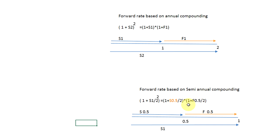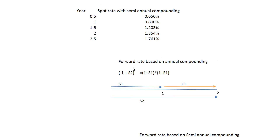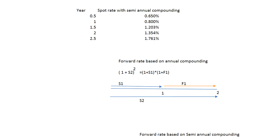One important point: when attempting a question or trying to calculate forward rates from spot rates, always notice what type of compounding is being used. Normally it's continuous compounding, which I will show in another video, but here I'm keeping it with semi-annual compounding to understand the concept. Based on this, we have already calculated the forward rates.